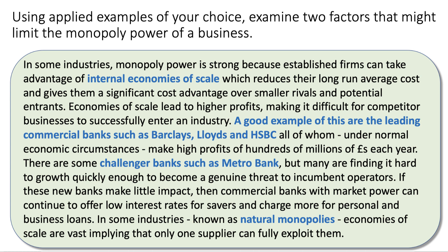In some industries, monopoly power is strong because established firms — the incumbents — can take advantage of internal economies of scale, which lowers their long-run average cost and gives them a significant cost advantage over smaller rivals or potential entrants. A good example is banking. The big banks — Barclays, Lloyds, HSBC — all make significant profits of hundreds of millions of pounds every year. There are some challenger banks, such as Metro Bank, but many newer operators are finding it hard to grow quickly enough to become a genuine threat to the incumbents.